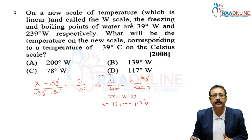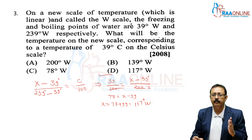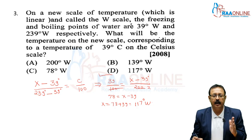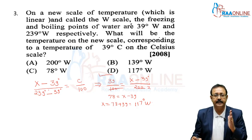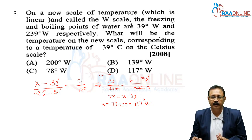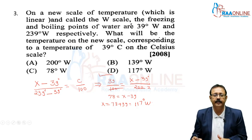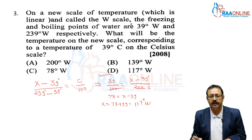The key fact to remember is: (unknown temperature − lowest fixed point) / (highest − lowest fixed point) is the same for all temperature scales. You can use this to convert any temperature between known and unknown scales.